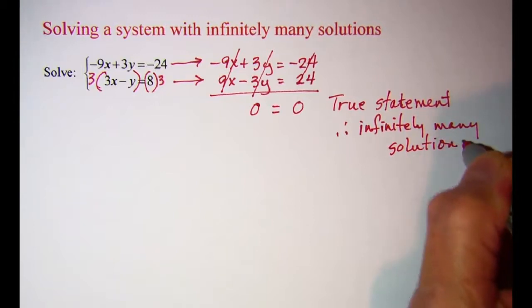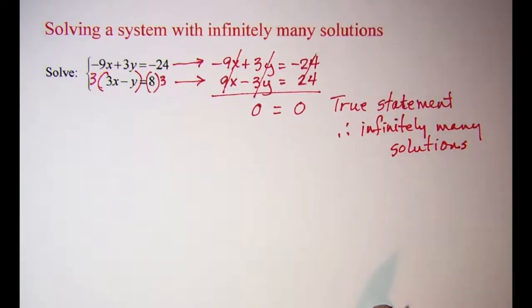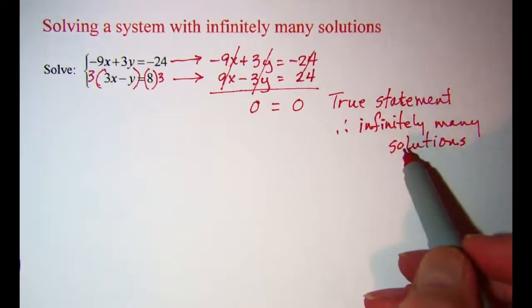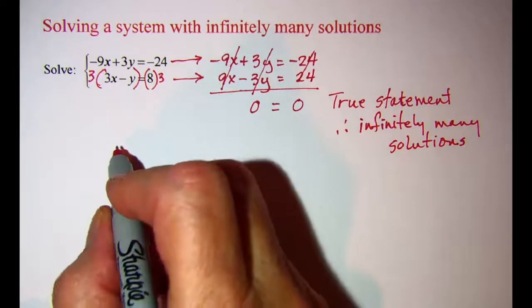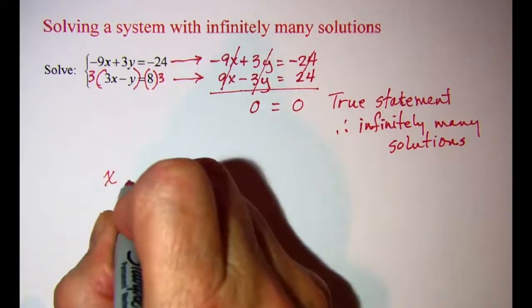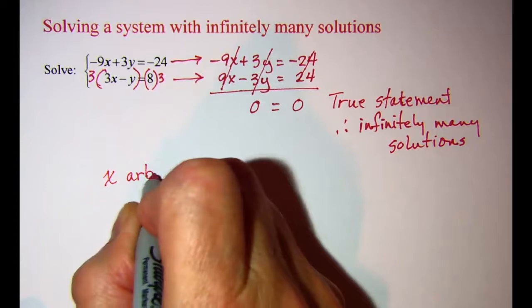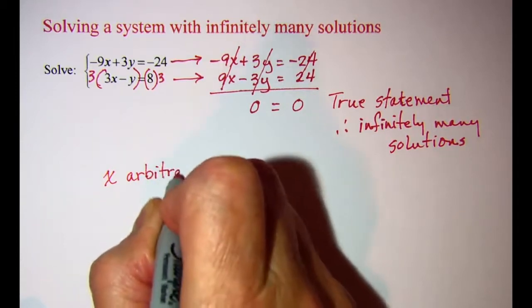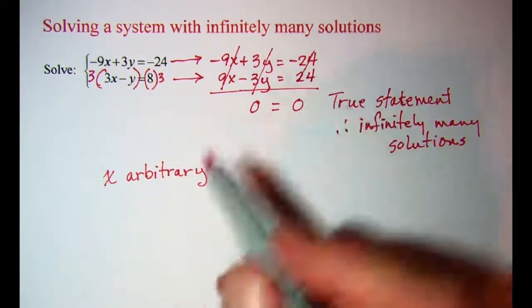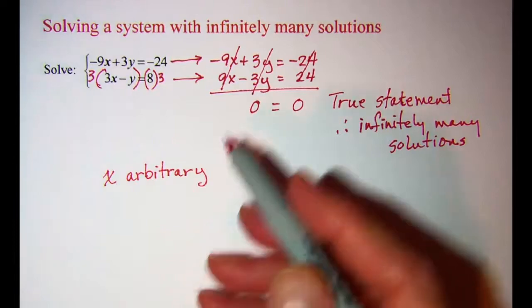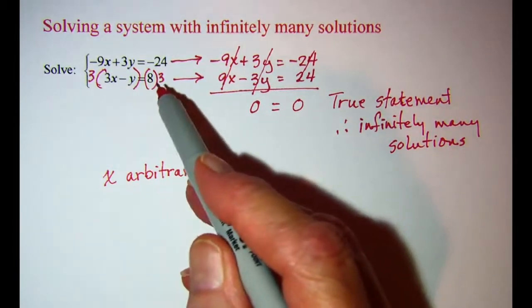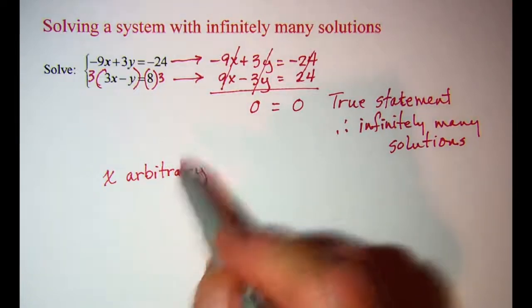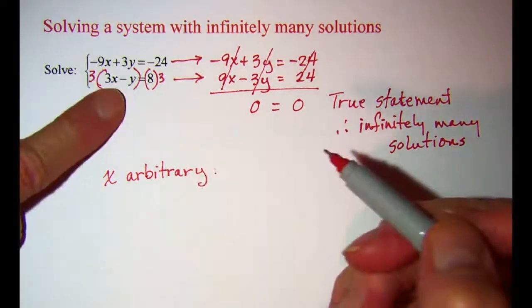And when that happens, you have to decide if you need to go further and give an ordered pair. If you're told to make the x arbitrary, then that means that we need to take one of our equations and write it in terms of only x's. Let's take this bottom one, we can take 3x minus y equals 8.